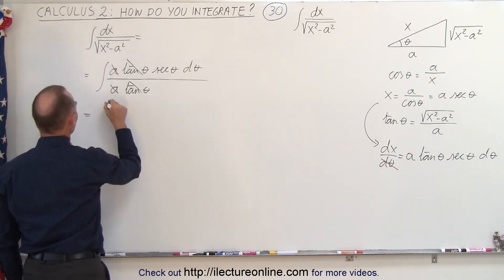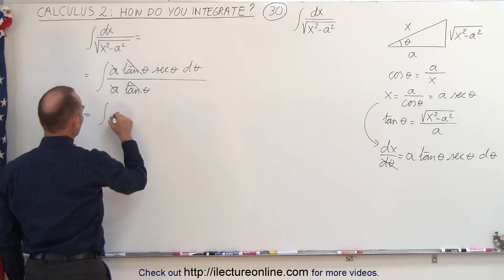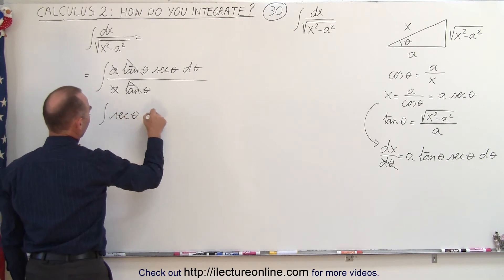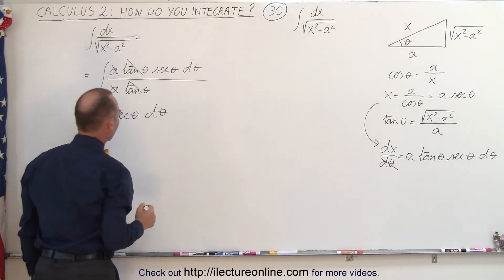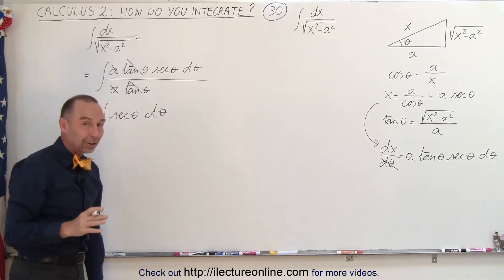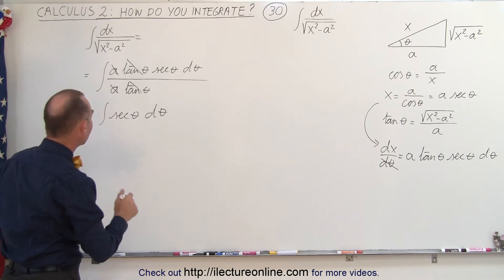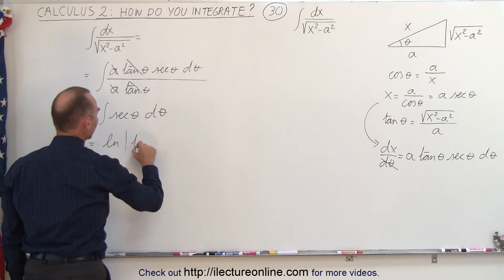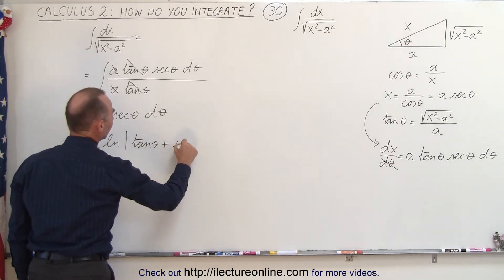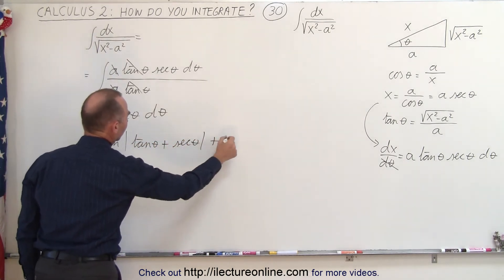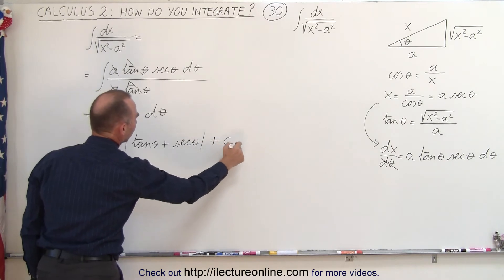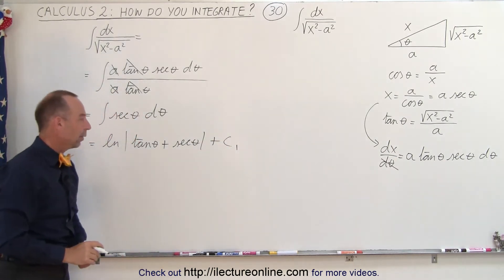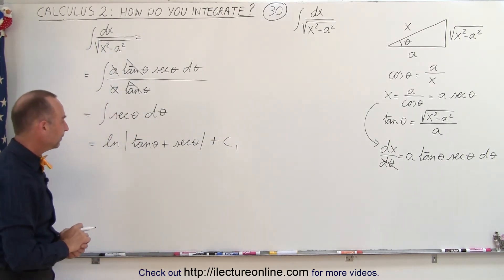And that we remember how to integrate from a previous video. So now we have to remember that the integral of the secant of theta is equal to the natural log of the tangent of theta plus the secant of theta. Of course, we have a constant of integration — I'll call it c1, because I think we need to adjust it later.